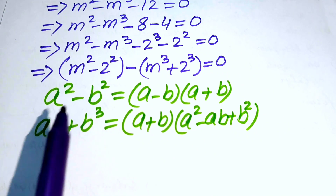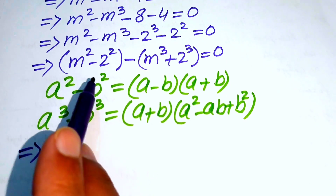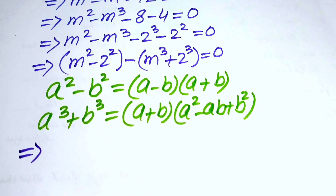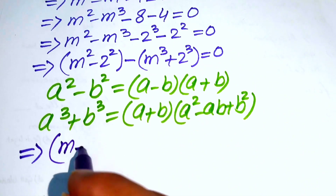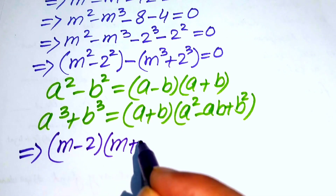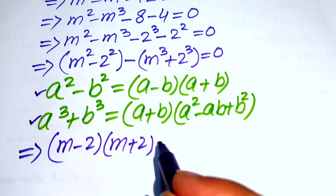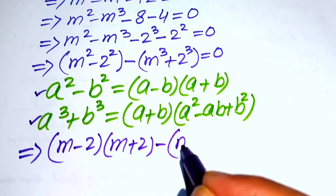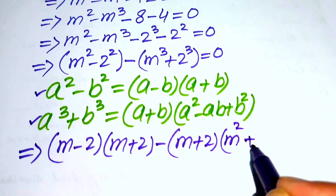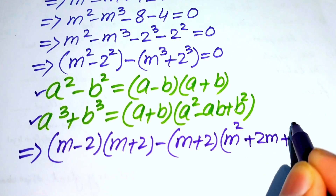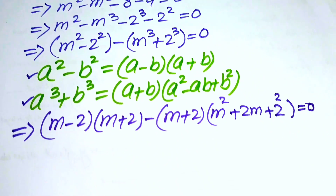Applying the difference of squares formula to (m squared minus 2 squared) gives (m minus 2)(m plus 2). Applying the sum of cubes formula gives (m plus 2)(m squared minus 2m plus 2 squared), and the whole equation equals 0.